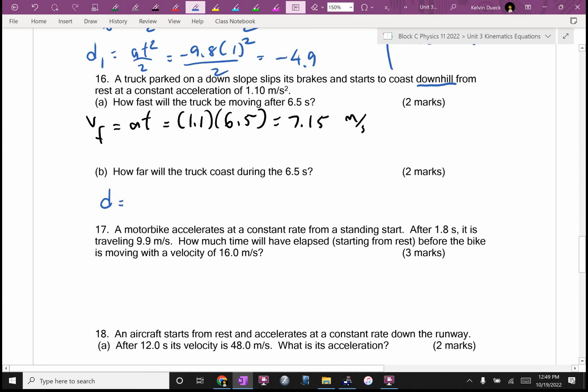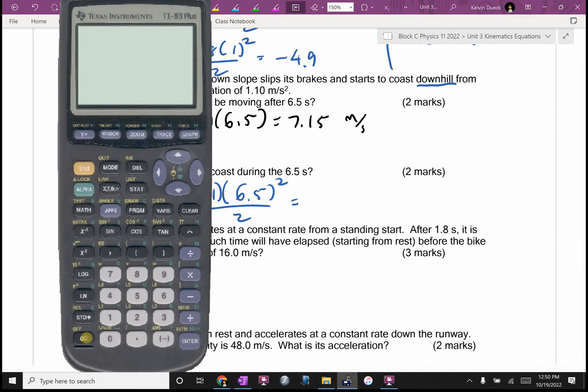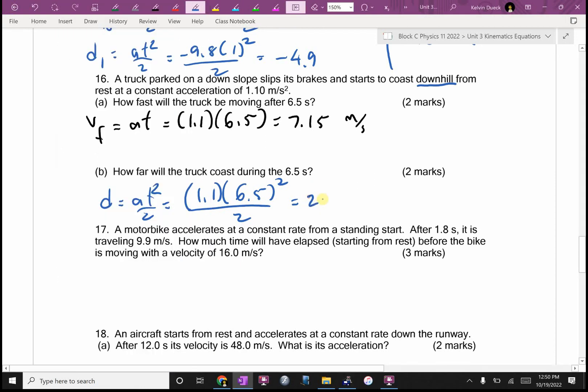How far will it coast? D equals AT squared over 2. You could also use VF squared equals VI squared plus 2AD. It's going to be 1.1 times 6.5 squared all over 2. 23.2 meters.